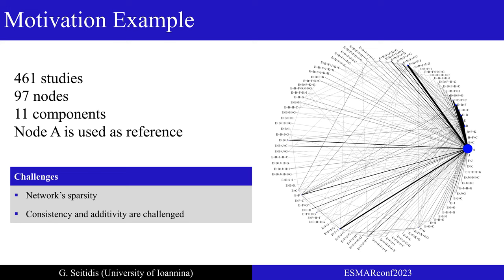As you can see from the network plot, there are many nodes, many comparisons, but few head-to-head studies. Therefore, the assumptions of network meta-analysis and component network meta-analysis will be challenged due to the sparsity of the network.